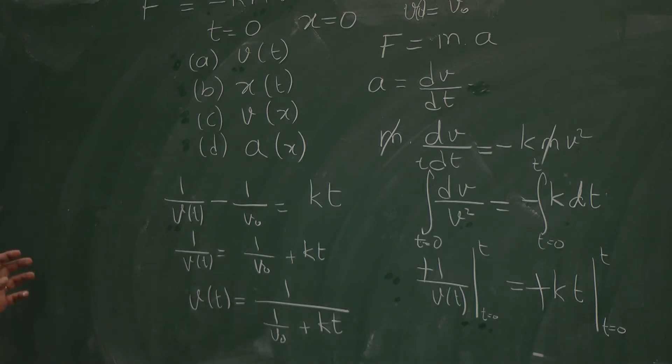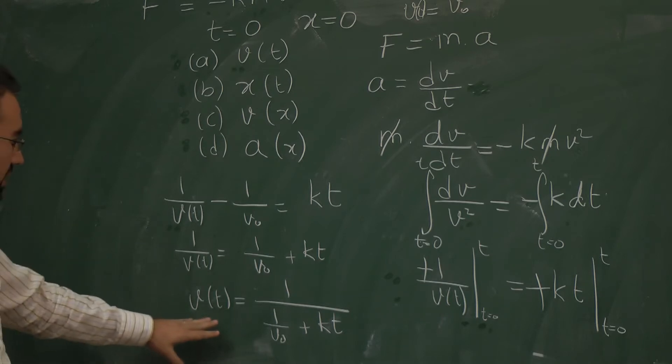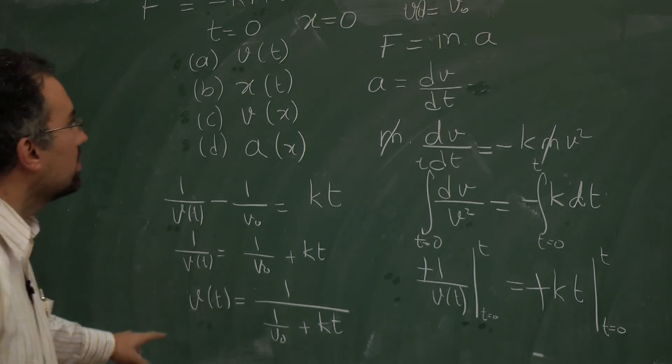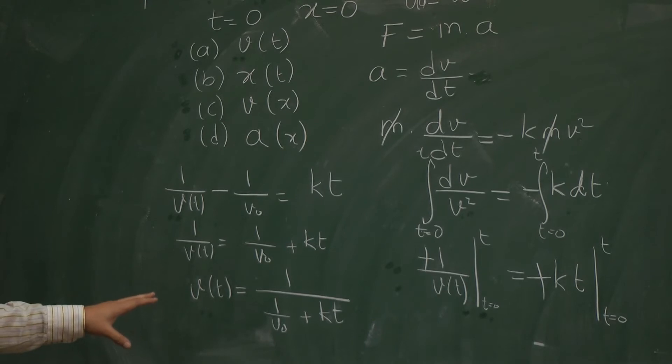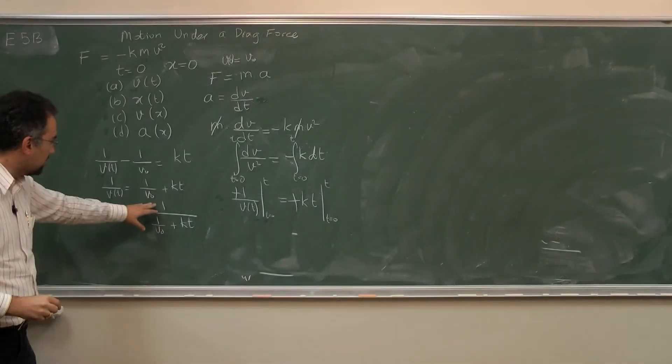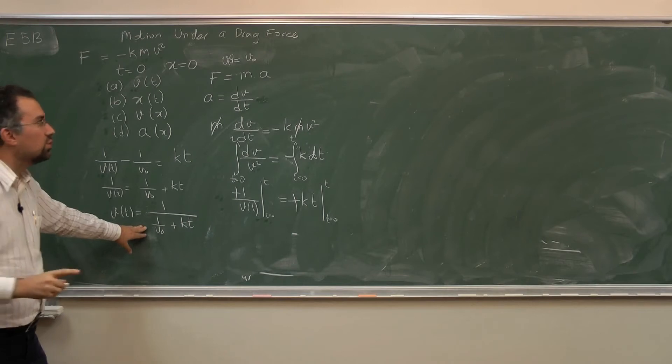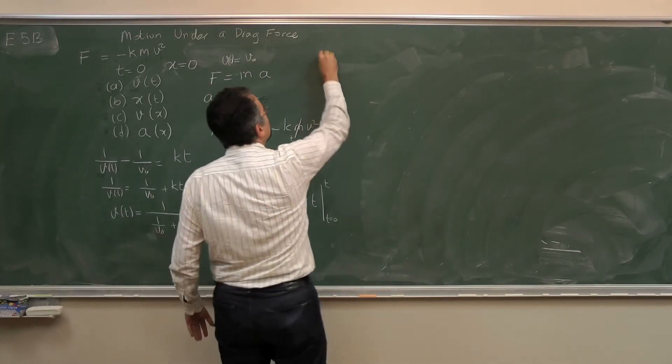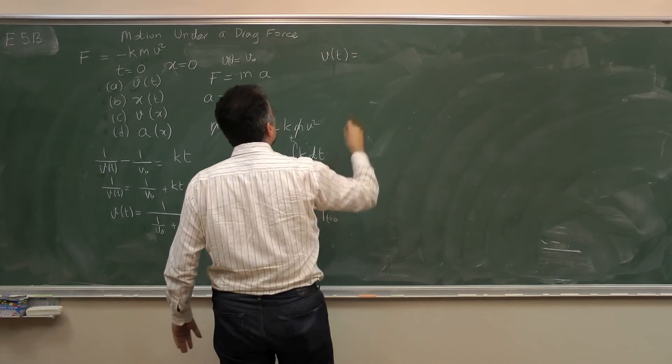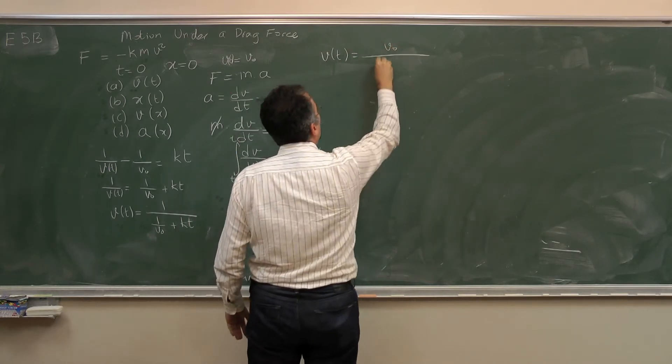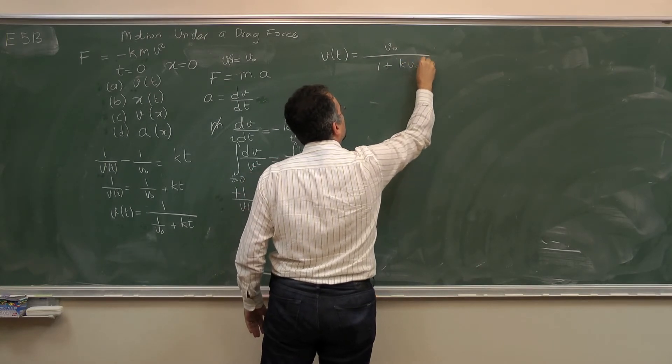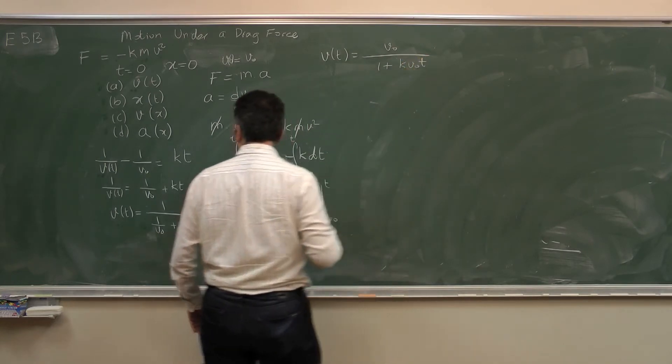Now this is in fact the correct answer but I can write it in a form which feels better, more comfortable. Here the units are sort of mixed up. I can't see that it's a velocity. So I can multiply the numerator and the denominator by v0 which gives me v0 over (1 plus k v0 t).